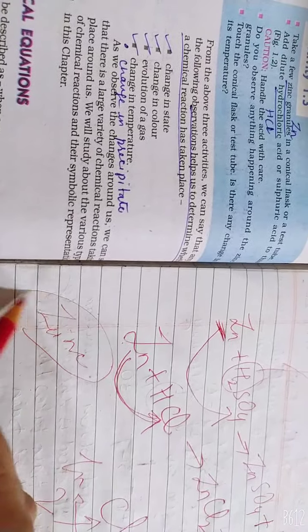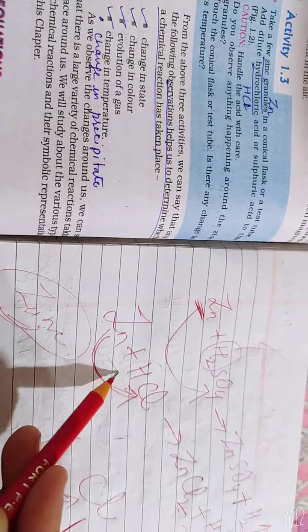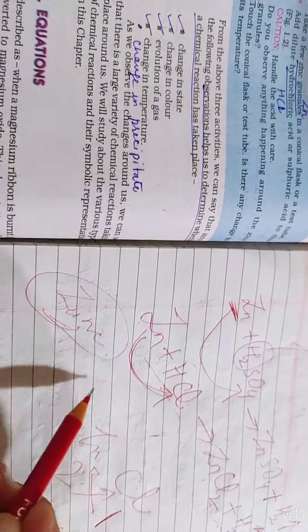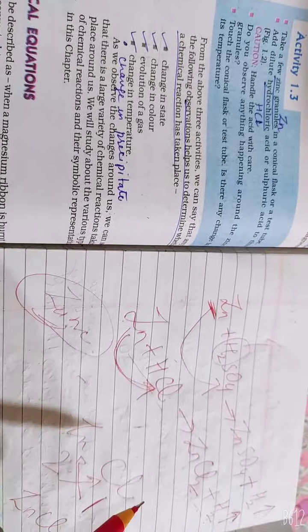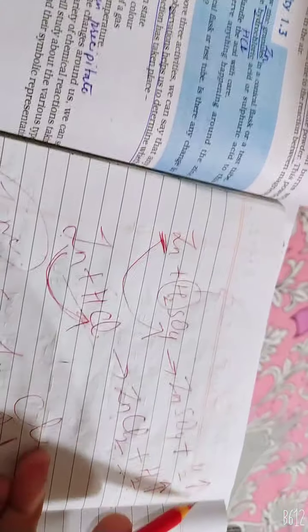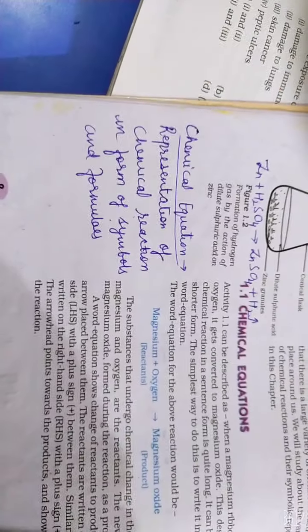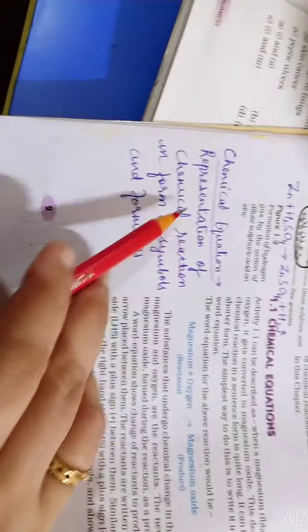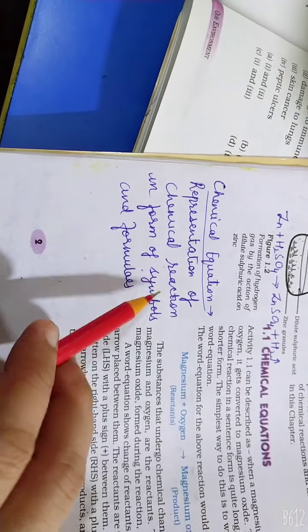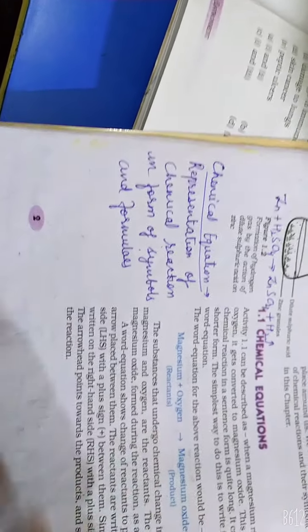If I use Zinc word, it's called Hydrochloric Acid. It's called chemical reaction. If I use symbols, if I use symbols like Zn or hydrogen gas, in symbolic form, it's called chemical equation. Okay? This is chemical equation. Representation of chemical reaction in the form of symbols and formulas.